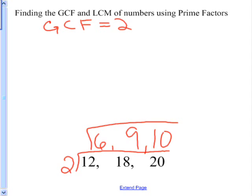Now look at 6, 9, and 10. What will go into these numbers? No other prime will go into all three numbers, but 2 will go into 6 3 times, and 2 will go into 10 5 times. 2 does not go into 9, so we bring up the 9.